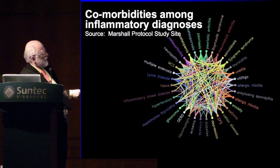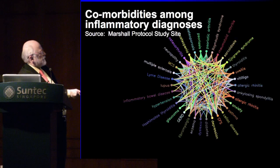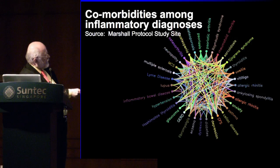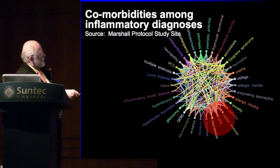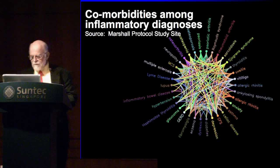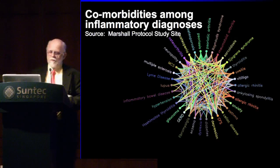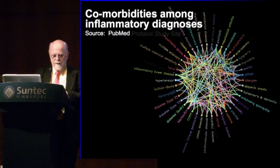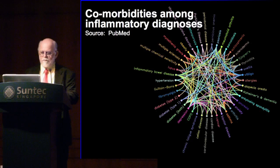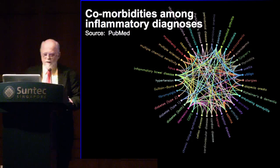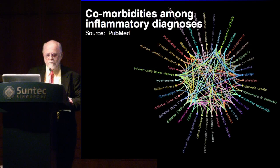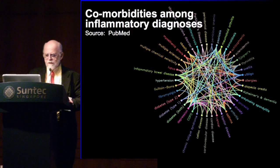If you take diseases like Sjögren's, you'll find that Sjögren's is often associated with osteopenia, CFS, and some of the other chronic immune diseases. We did the same comorbidity analysis looking at studies from PubMed and the results are the same — very rarely do we find people, most of these are adults, with a single autoimmune diagnosis. It's usually a complex of chronic diseases.